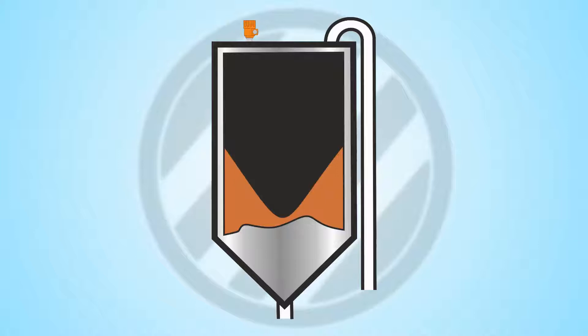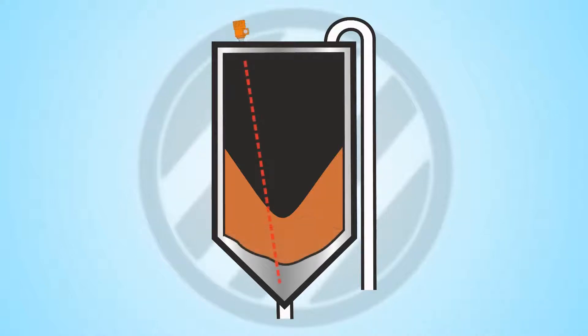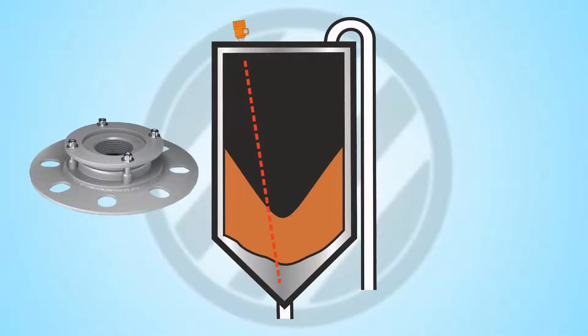In some cases, mounting the radar in a good location may be difficult. For example, you may be forced to put it closer to the edge of the silo, which could cause measurement problems, so a rotational aiming kit is recommended to aim the radar beam to the correct location. This may also help if the vessel has internal structures or if you need to target the bottom of the cone. Please note that for many applications this is not required.